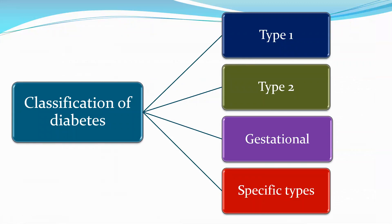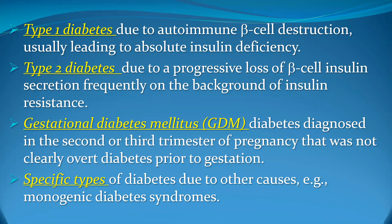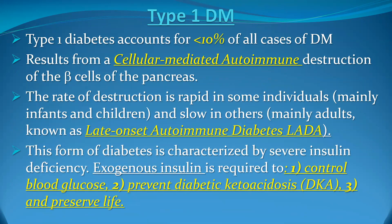Diabetes mellitus is classified into four types: type 1, type 2, gestational diabetes, and specific types of diabetes. Type 1 is caused by immune-mediated beta cell destruction. Type 2 is caused by progressive loss of beta cell insulin secretion combined with insulin resistance. Gestational diabetes is diagnosed during pregnancy, usually in the second or third trimester. Specific types include many causes, including monogenic diabetes syndromes.